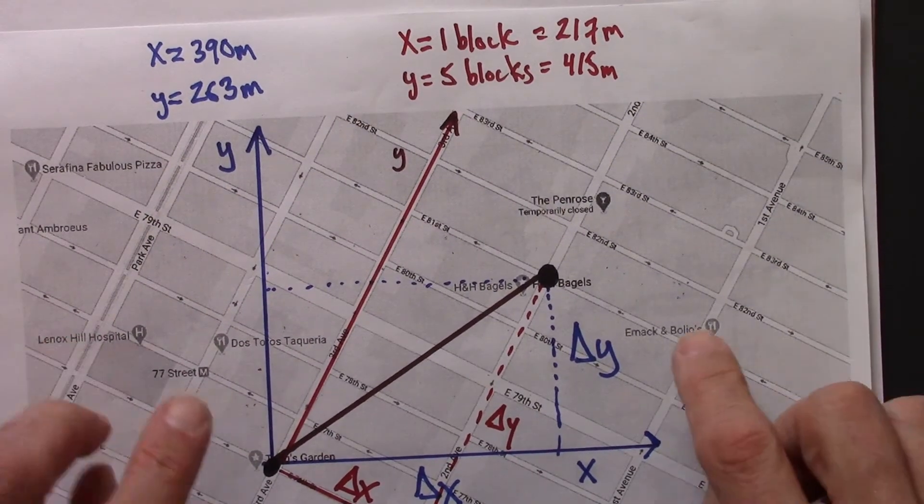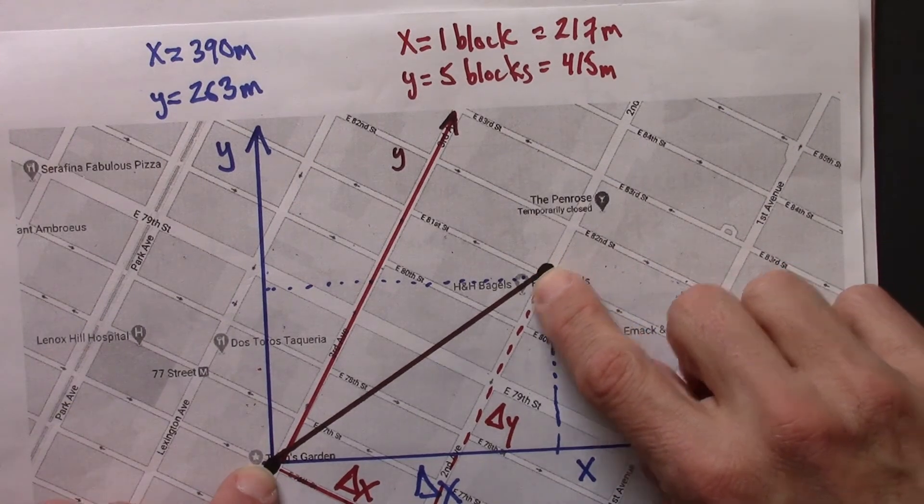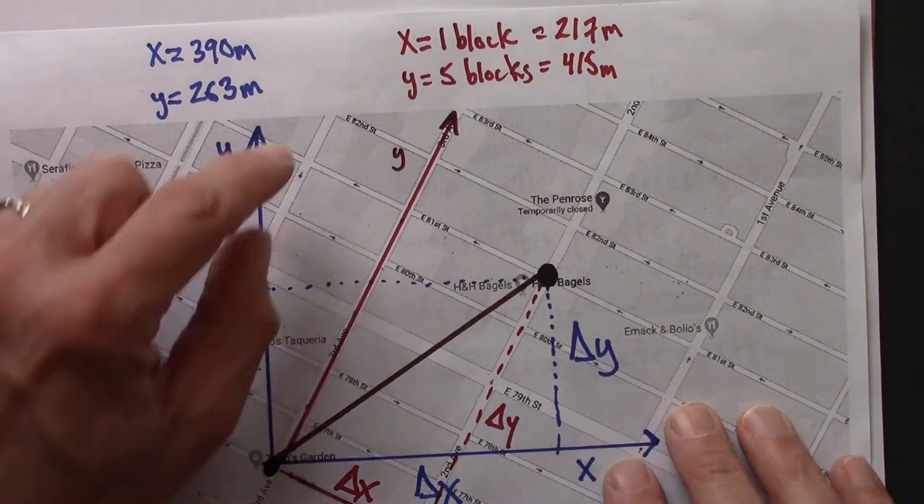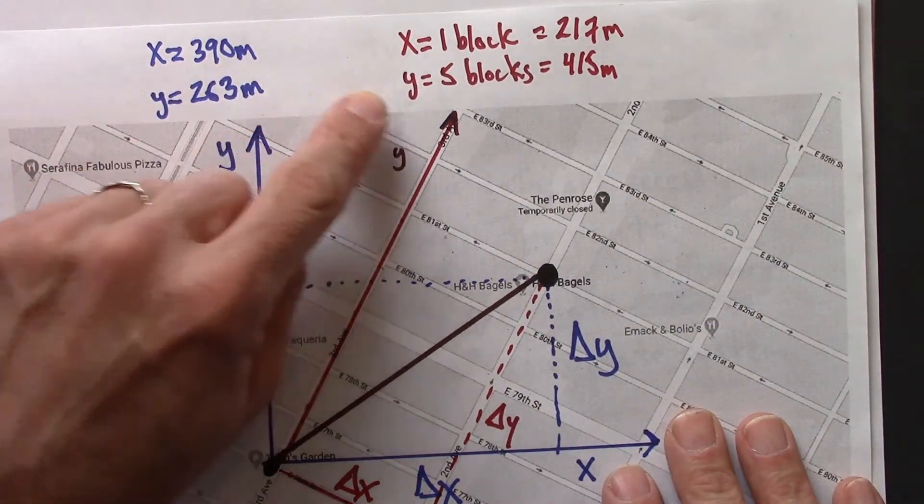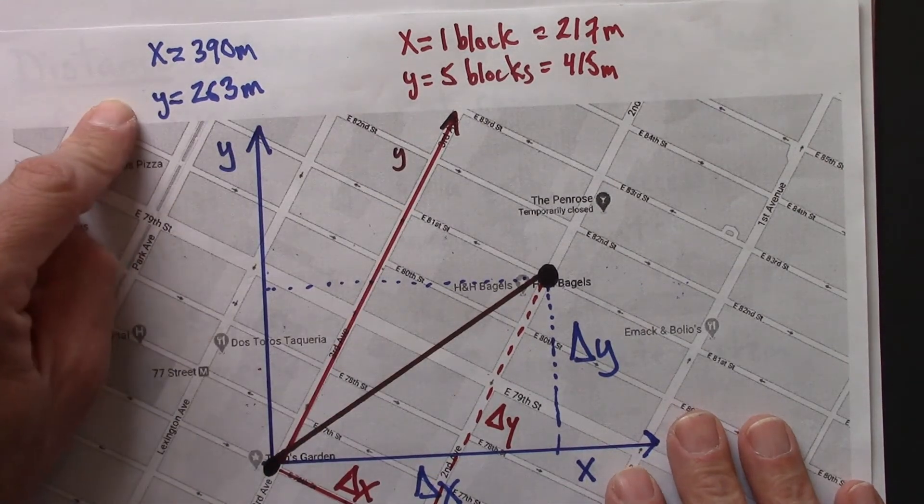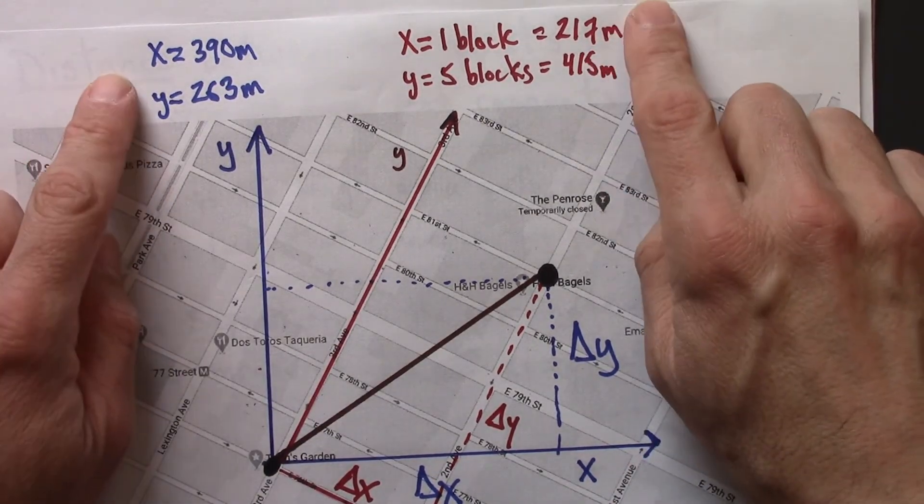To go back to this example, the length of this brown line is the distance between these two points. This x, y is a coordinate separation. This x, y is a coordinate separation. They're different for different coordinate systems.